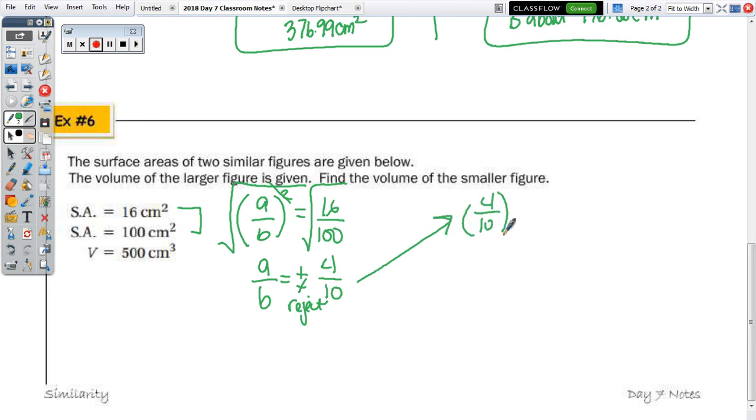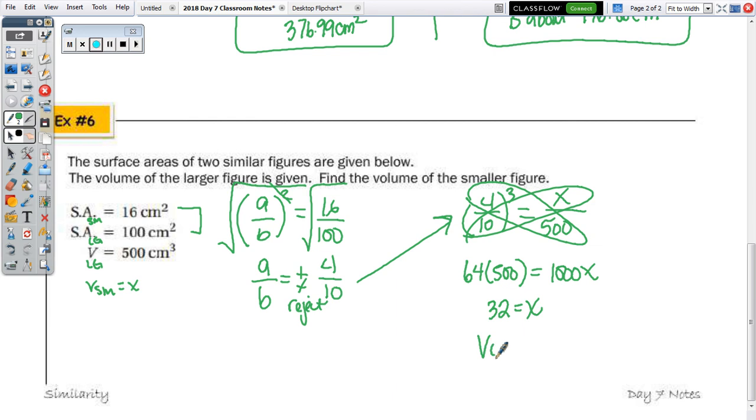Using the 4 tenths, we know that when we cube that ratio, we get the ratio of the volumes. Now, this was obviously the surface area of the small to large. And the volume of the larger figure is given. So, I'm going to say the volume of the small equals X. So, in this case, the X is in the numerator. The 500 is in the denominator. So, 4 cubed is 64. So, we have 64 times 500. And 10 cubed is 1,000 X. So, multiply and divide by 1,000, we get X equals 32. So, the volume of the smaller figure is 32 cubic centimeters. So, let's get cut out, hmm? Okay.